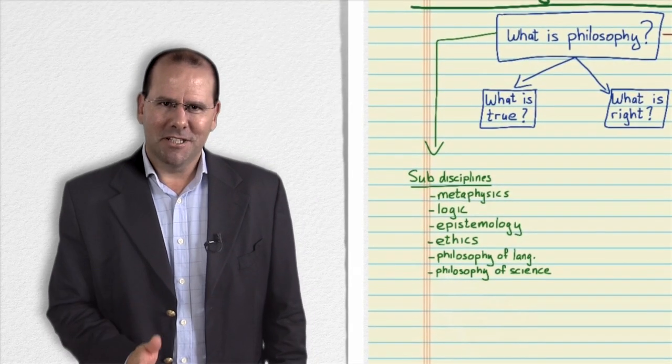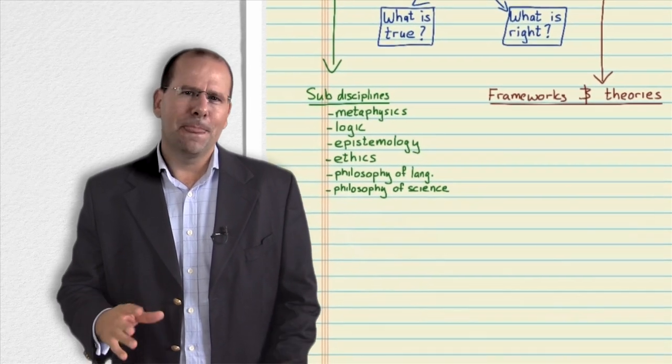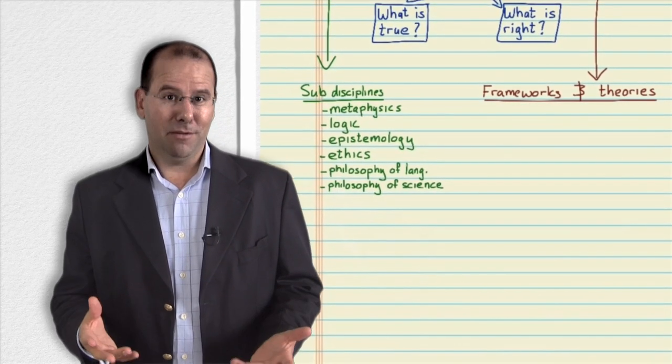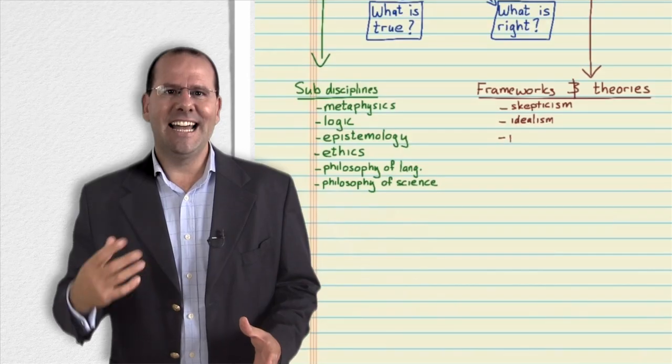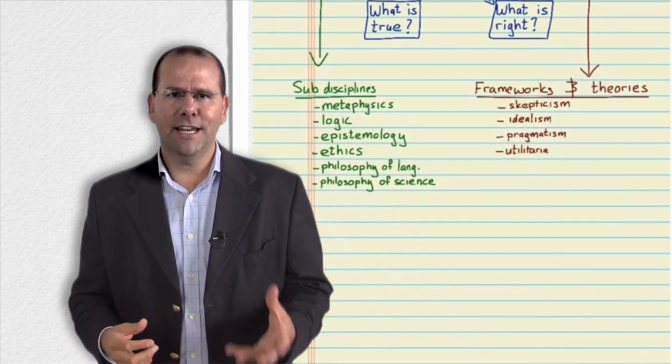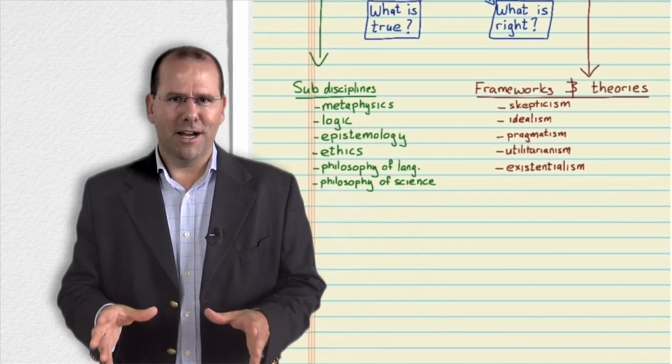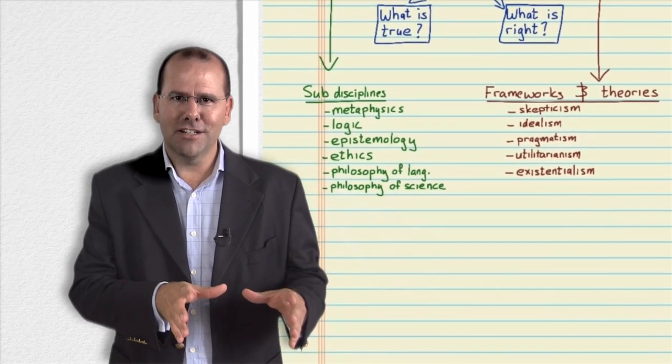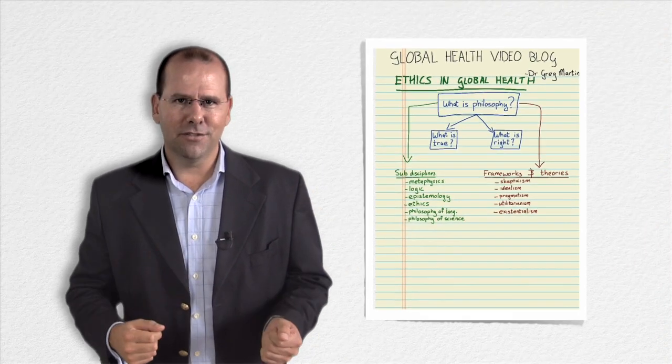Now, within each of these sub-disciplines, we've got a multitude of theories and frameworks and ideas, and these are associated with various schools of thought. So what do I mean by that? Let me give you some examples. There's ideas like skepticism, idealism, pragmatism, utilitarianism, existentialism. These are just a few ideas. Don't worry about it. We're going to go into the ones that are relevant and try and see how we can lean on some of these frameworks to better understand ethics and philosophy in the context of global health.